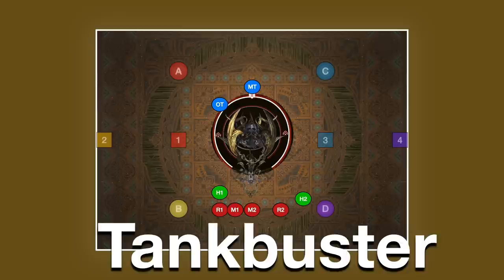Finally, if the tank hit by this takes damage from the attack, they're going to get themselves a thunder resistance down, meaning that they're going to take lethal damage from the next autos, so make sure that you have a tank swap during this. You can just have your two tanks stack on top of each other for this, as again, it does not cleave.